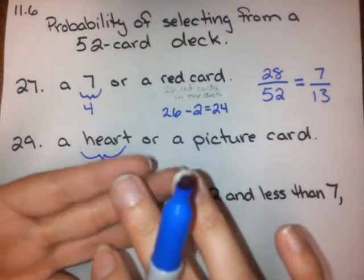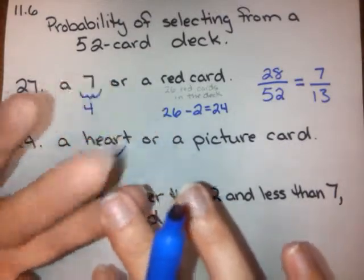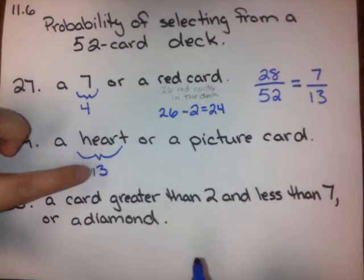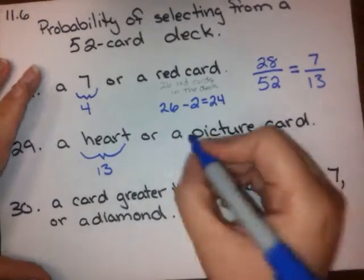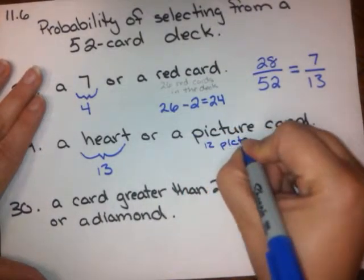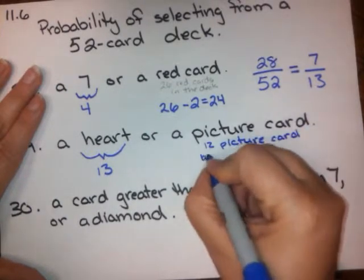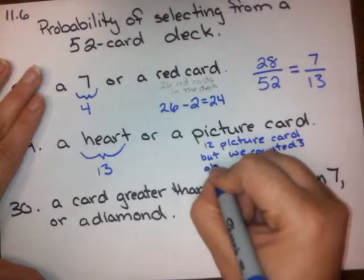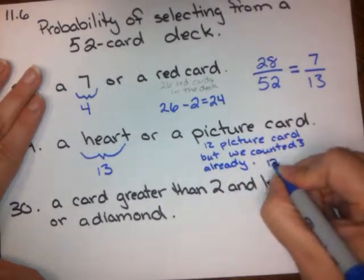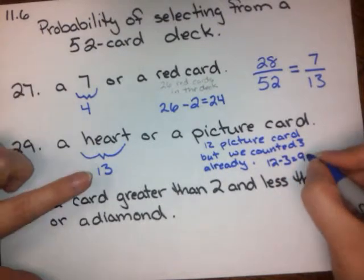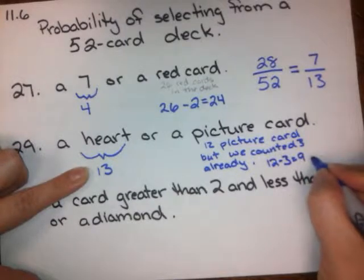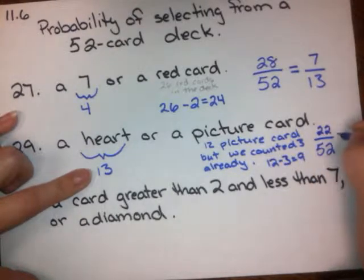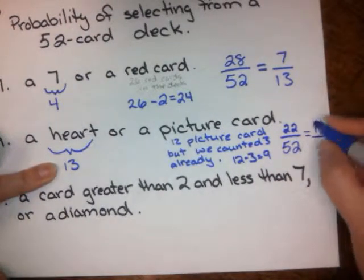We have jack, queen, king of hearts; jack, queen, king of diamonds; jack, queen, king of spades; jack, queen, king of clubs. So that's 12 — three times four is 12. But I already counted all three of the hearts picture cards. There are 12 picture cards, so we use 12 minus 3, which equals 9. 13 plus 9 gives us 22 over 52. Remember, 52 is our sample space. 22 over 52 simplifies to 11 over 26.